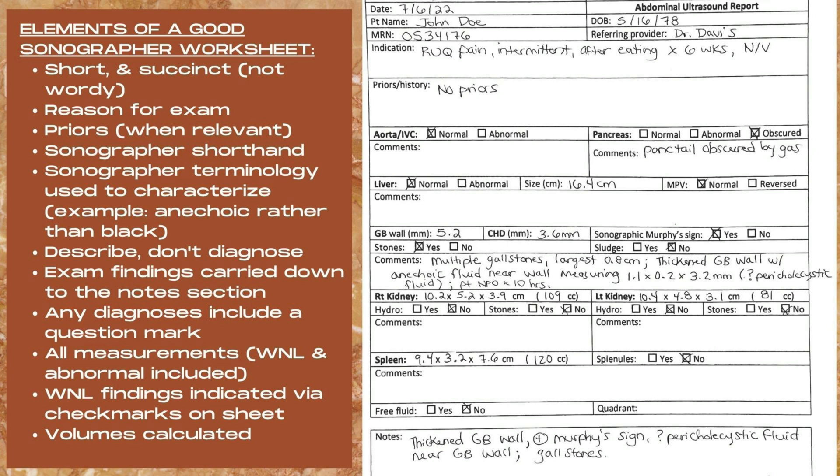First we're going to look at a good sonographer worksheet. We have all of the patient data included, and the indication for exam is right upper quadrant pain intermittent after eating times six weeks, and nausea and vomiting. Note that this is short, not wordy, and uses sonographer shorthand. I've also indicated that there are no prior exams.